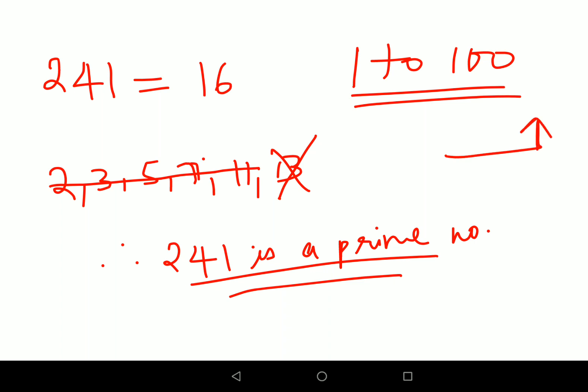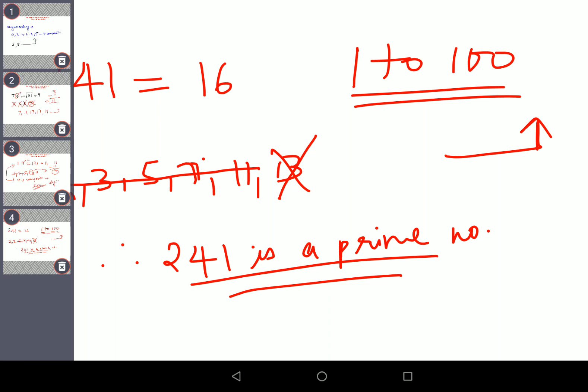Now let's look at one more of these, let's look at 307. For 307, all you have to do is again, this is very close to 18 square, so we'll write down all the prime numbers up to 18: 2, 3, 5, 7, 11, 13, and 17.